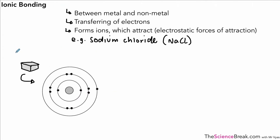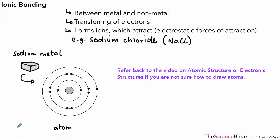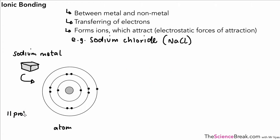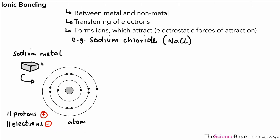Here we have a small sample of sodium metal. If we look at one atom of sodium, you'll see that it has 11 protons and therefore 11 electrons. Protons carry a positive charge and electrons carry a negative charge, and therefore we have a balanced number of protons and electrons in the atom.